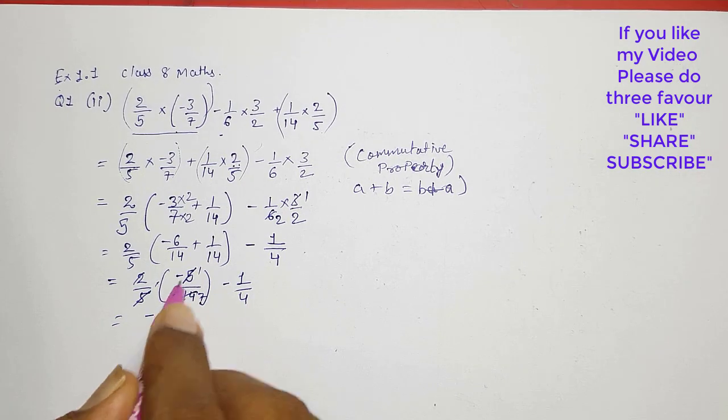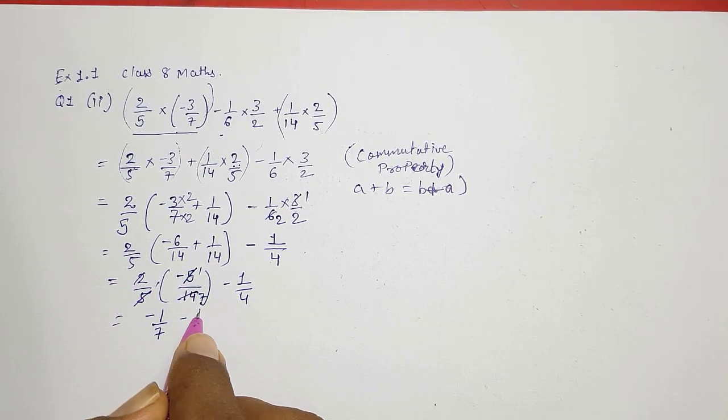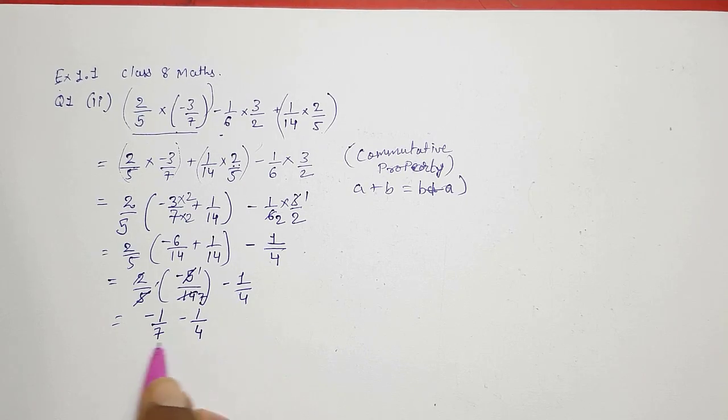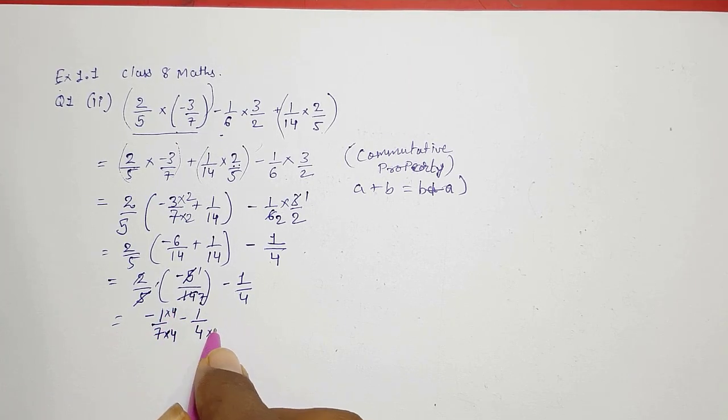Here multiplication again because bracket is there, so directly 5 1s and 5 1s here, 2 1s and 7s, so here you will get minus 1 in the numerator and 7 in the denominator minus 1 by 4.